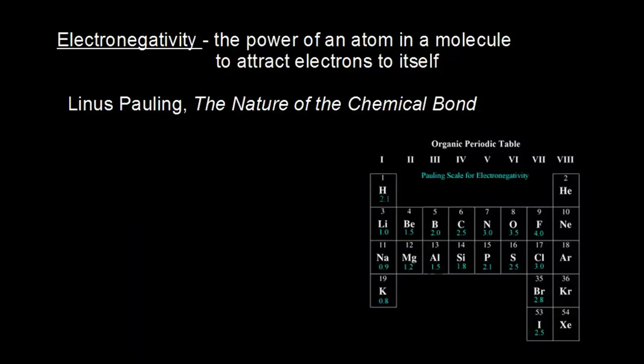Electronegativity is probably the most important concept to understand in organic chemistry. We're going to use the definition that Linus Pauling gives in his book, The Nature of the Chemical Bond. Linus Pauling says that electronegativity refers to the power of an atom in a molecule to attract electrons to itself.